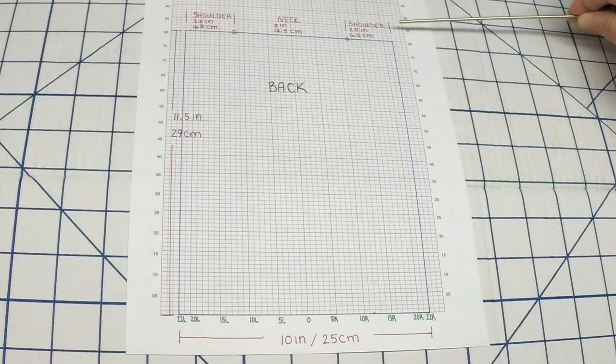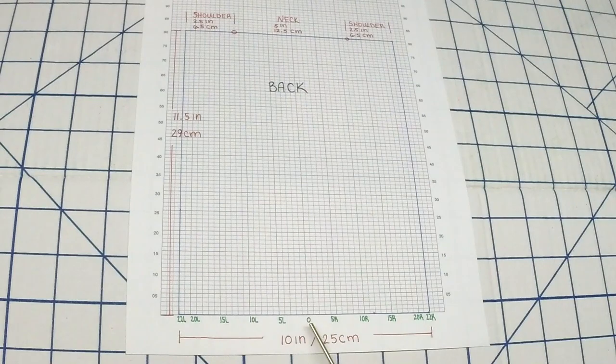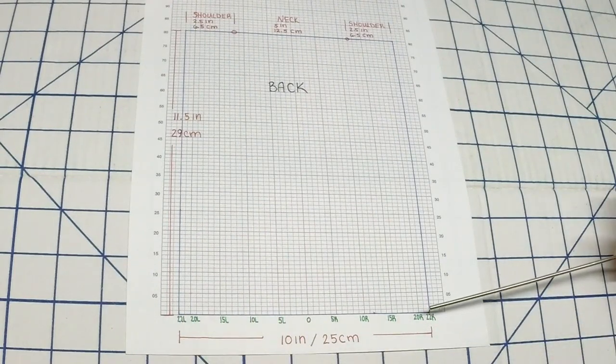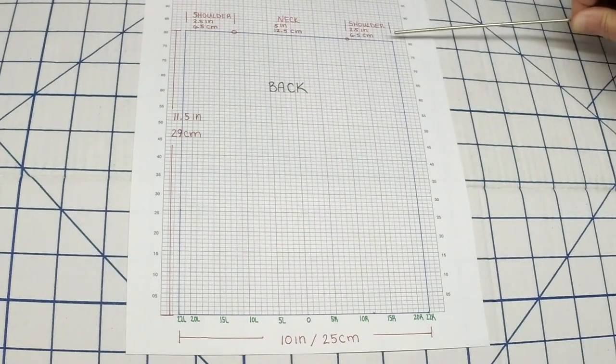This is the schematic for the back. You're going to be casting on 44 stitches, 22 to the right and 22 to the left, and you're going to be working in pattern A all the way up to row counter 80 and then you will be casting off.